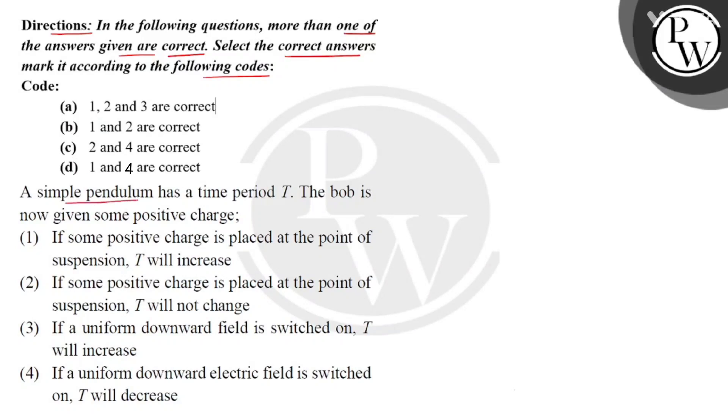Now, a simple pendulum has a time period T. The bob is now given some positive charge. So children, we have a simple pendulum which has a rigid support through the bob, and there are some positive charges. This simple pendulum is given T, which we can express as 2π square root of L divided by G, where L is from its point of suspension to its center of gravity.